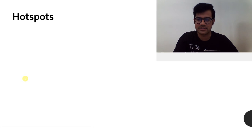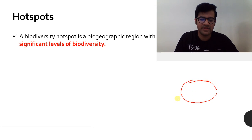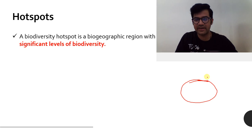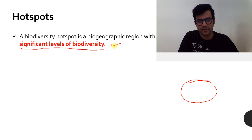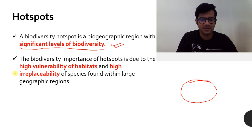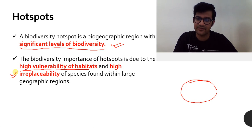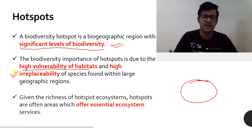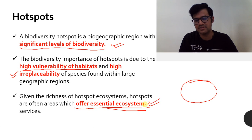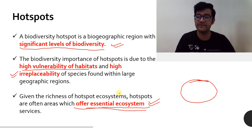The next key term is hot spots. There are certain areas on the planet which have significant levels of biodiversity, so they need to be conserved. The biodiversity levels and services offered are high. They also have high vulnerability of habitats and high irreplaceability — meaning if we lose them once, it's very difficult to regain them. So it is our responsibility to conserve those areas first, as the ecosystem services they offer are much higher due to greater diversity and stability levels.